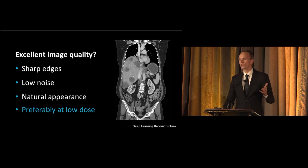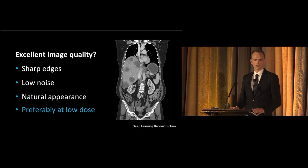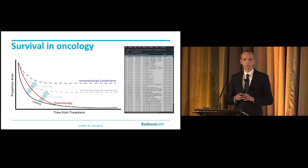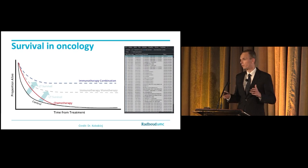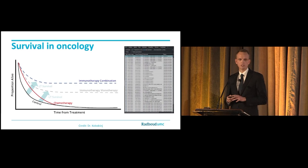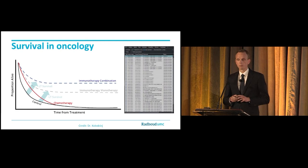Is further dose reduction a priority? Yes, I do think so — not only for young people and in pediatrics, but especially also in oncology. Because with new therapies such as immunotherapy, survival of oncology patients has increased. These patients require follow-up, of course. On the right is an example of a patient who underwent over 20 CT scans over the last years, and this becomes more common. Therefore, dose reduction is very important, because we want to give these patients confidence about their disease, but we don't want to give them new tumors from the radiation exposure.